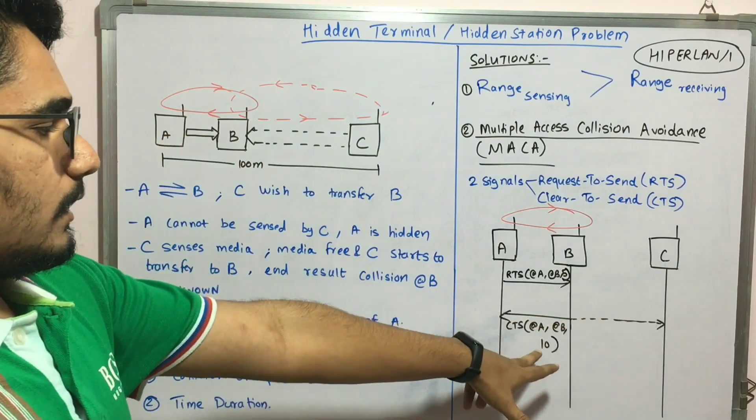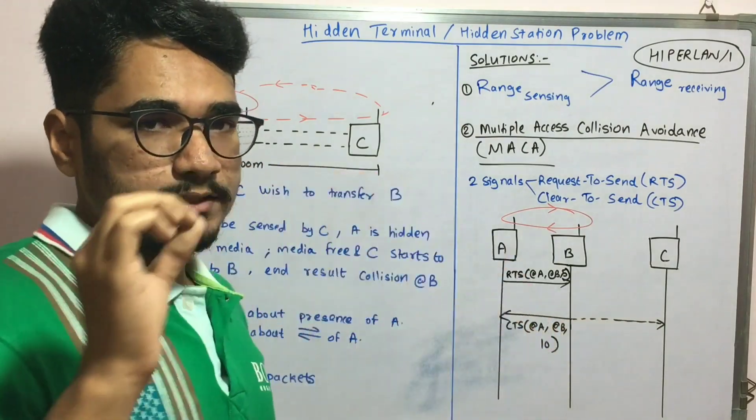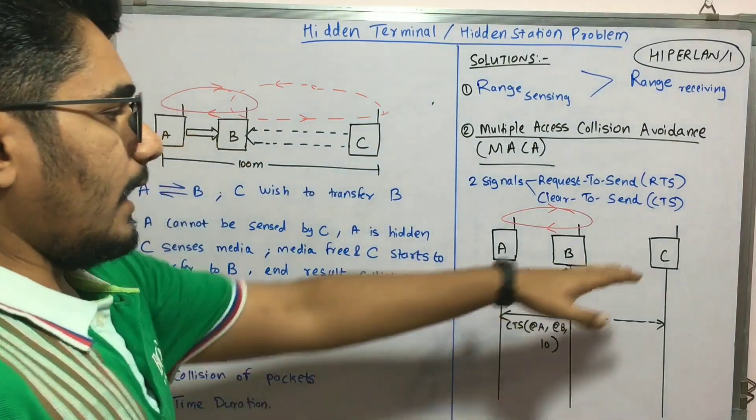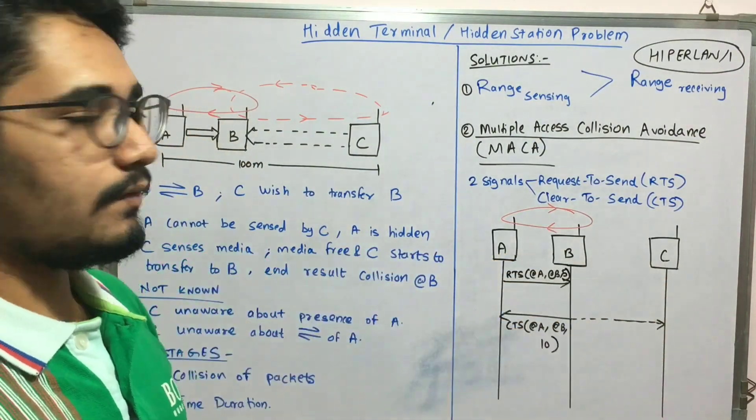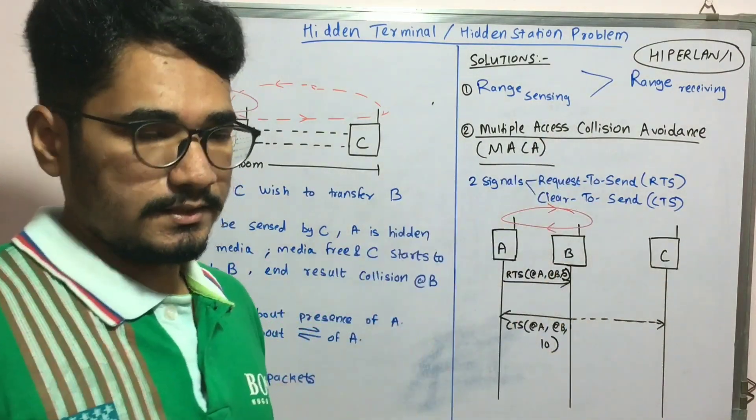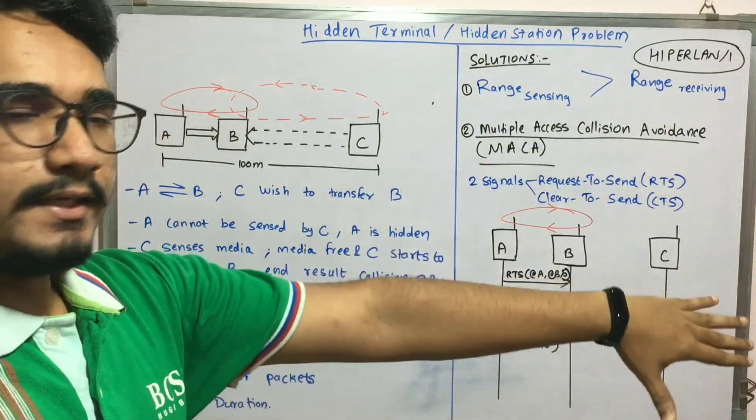It will come to know that during this time period, or for at least 10 time duration, they are going to do the transfer. So C will not participate within that time and will not cause any disturbance, and then later it can do the transmission.